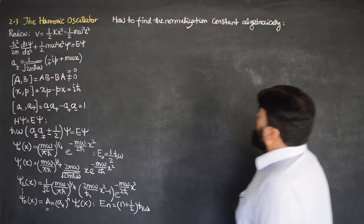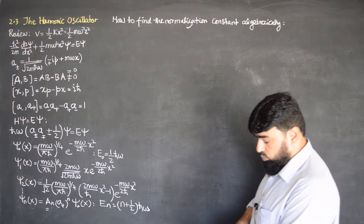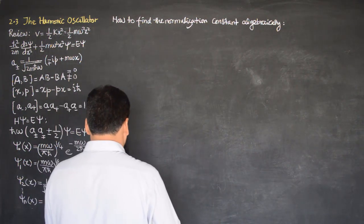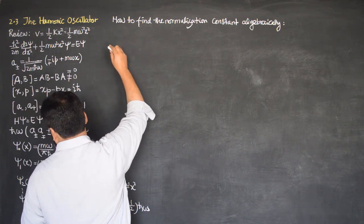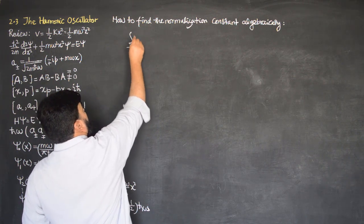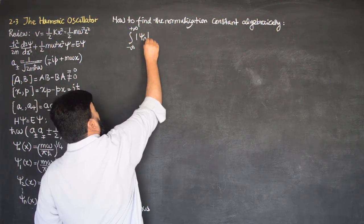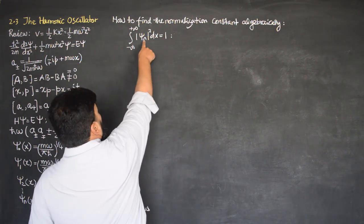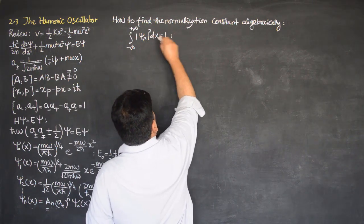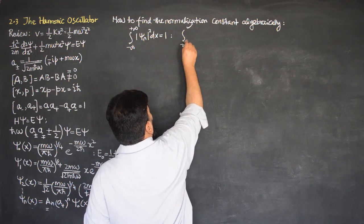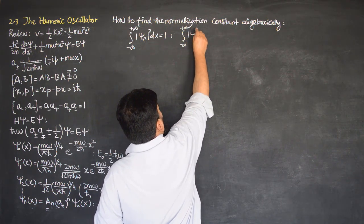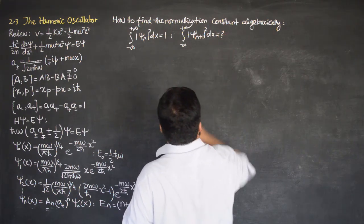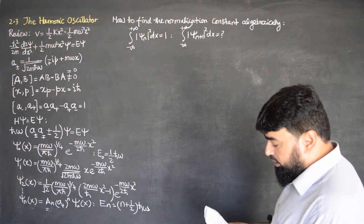We need to address this question. We know that for any ψₙ, the integral from minus infinity to plus infinity of |ψₙ|² dx equals 1 — it is a normalized state. So what about if we go beyond this state? What will the integral from minus infinity to plus infinity of |ψₙ₊₁|² dx be equal to?